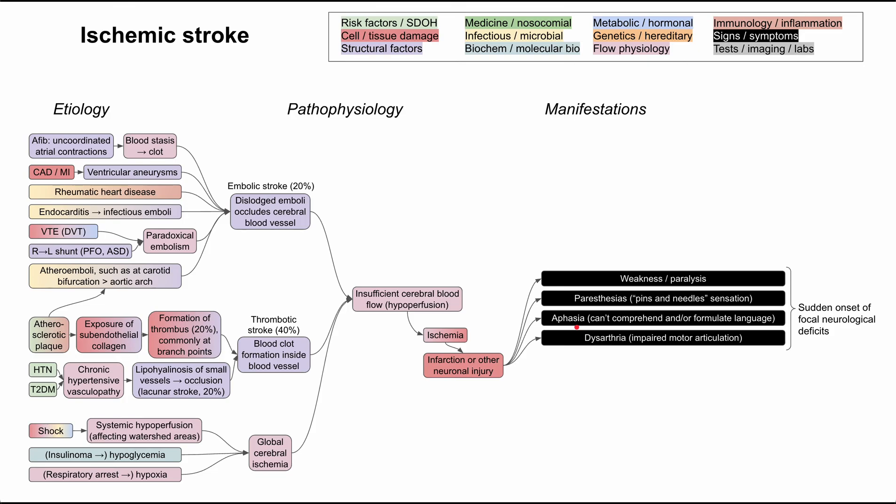That would indicate a stroke in Wernicke's area of the brain or in Broca's area of the brain. You can also have dysarthria, that's when you have impaired motor articulation from the motor neurons that go to your tongue, to your mouth, to your palate. It might also impact swallowing and that motion in your mouth as well.